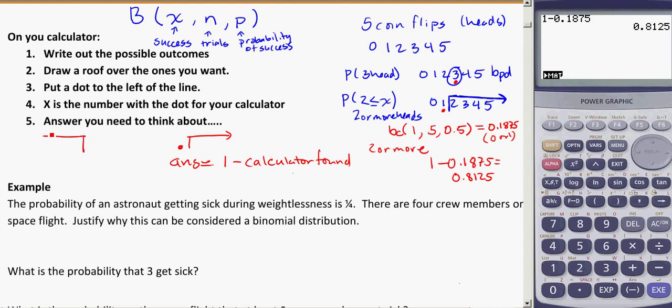If you end up with a situation like this, where your dot is included under there, your answer is just exactly what the calculator gave you. You don't have to do any 1 minus. Okay, so it's a bit complex when we look at it for the first time. But it's a rule of thumb that will help you solve all the problems correctly. So again, write out your possible outcomes, draw a roof over the ones that you want, or circle it if you want just one.